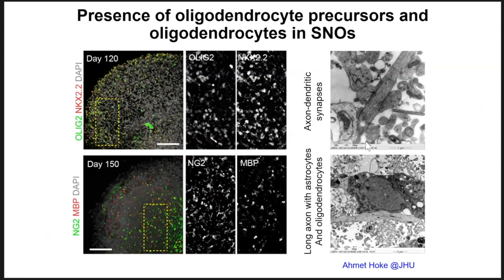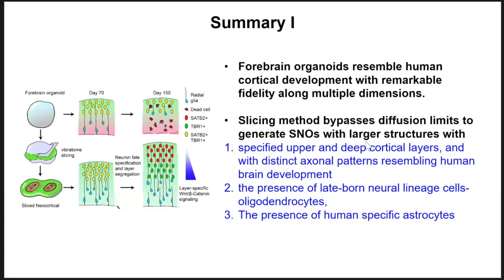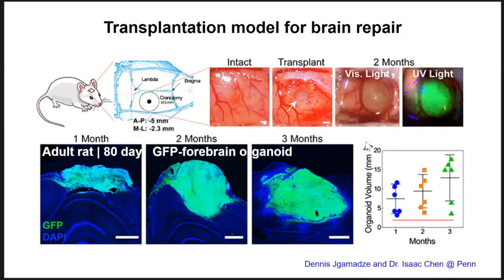To summarize the first part: we have developed a protocol to robustly generate forebrain-specific organoids recapitulating human cortical development — the presence of human-specific neural stem cells, human-specific astrocytes, the co-expression trajectory of upper and deep cortical markers and its segregation dependent on WNT7B signaling. We are also wondering whether our organoids can participate in more physiological functions, so we decided to use a transplantation model system in collaboration with Isaac Chen's group at UPenn.